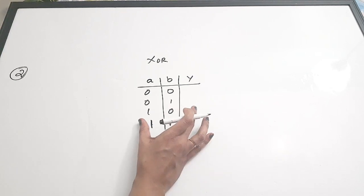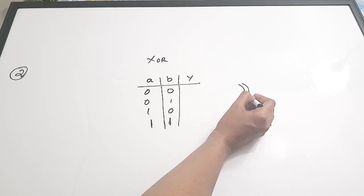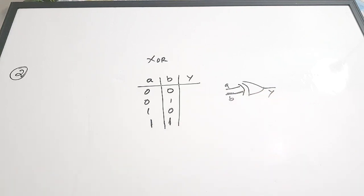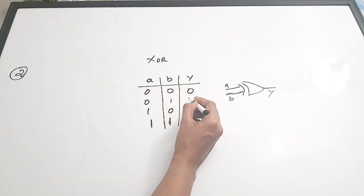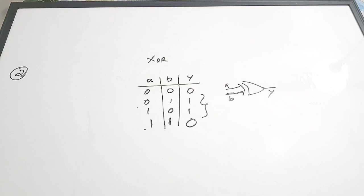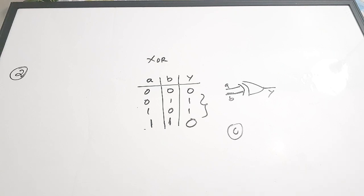The question is asking when an XOR gate produces an output of 1. When 0,0 is given, output is 0. When 0,1 is given, output is 1. When 1,0 is given, output is 1. When 1,1 is given, output is 0. So clearly, whenever the inputs are different, the XOR gate produces a 1. Correct answer is option C — different.